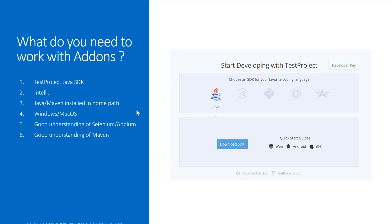I use both Windows and Mac and they work pretty much exactly the same way. You should have a good understanding of Selenium and Appium while developing add-ons, as that's what we'll be working with. You should also have a good understanding of Maven because we'll use it to compile our project into a JAR file and upload it as an add-on to test project.